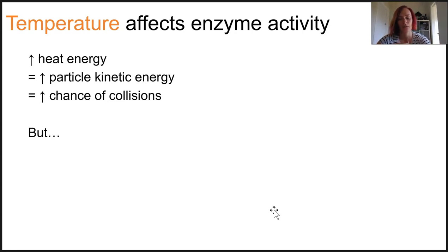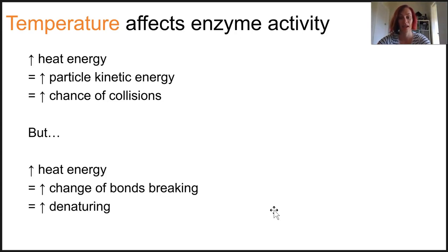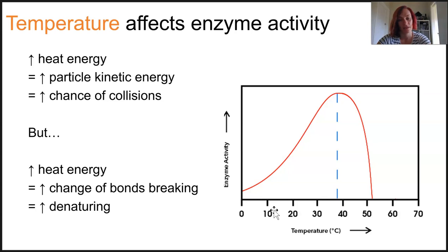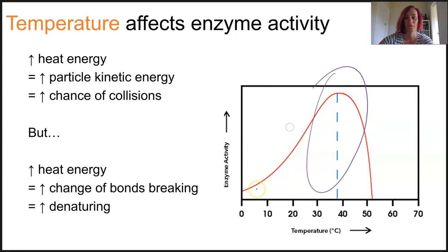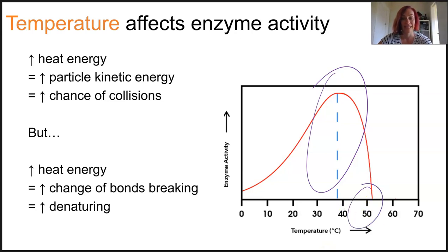But if there is too much of an increase in heat energy, the bonds actually break in the polypeptide and the enzyme will denature and not do its job. On a graph of temperature versus enzyme activity, the enzymes have a perfect opportunity right in the middle — that's their Goldilocks zone — and once things get a little bit too hot, the activity decreases significantly because of the denaturing enzyme.